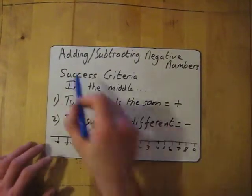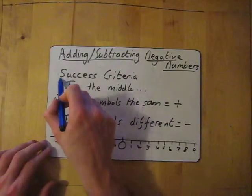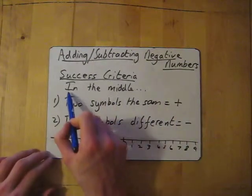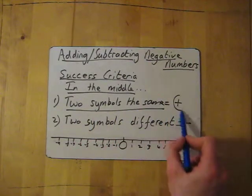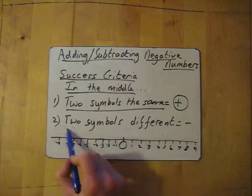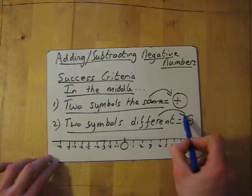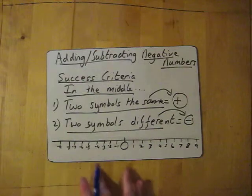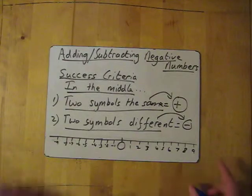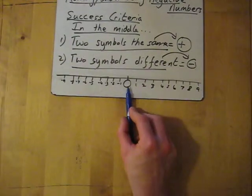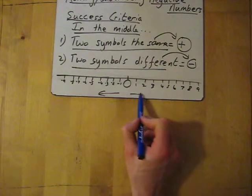Now we're going to have a look at adding and subtracting negative numbers. The success criteria: you need to look at the two symbols in the middle of the question. If the two symbols are the same in the middle, then you need to add the numbers. However, if the two symbols are different, you need to subtract. So same, you have to add; different, you need to subtract. I've done this number line at the bottom — adding and subtracting negative numbers, this can be quite helpful. If I take away numbers, taking away goes that way. If I'm adding numbers, we go up this way.